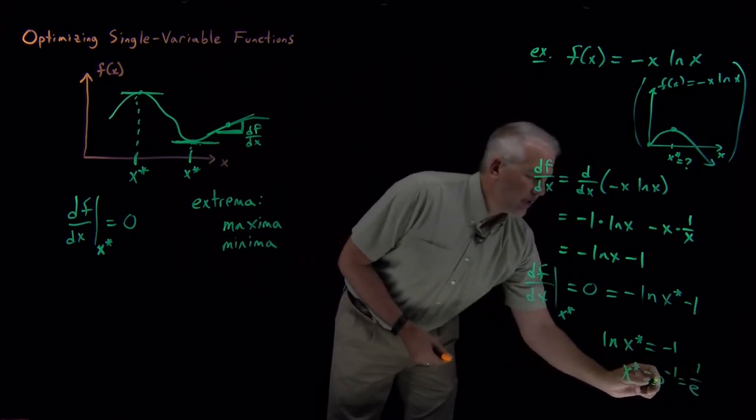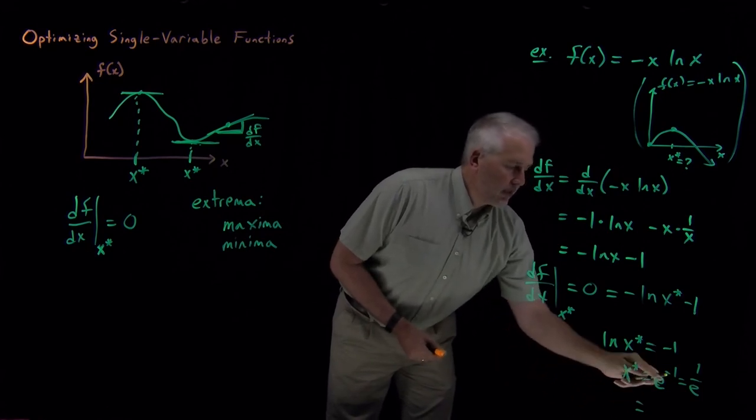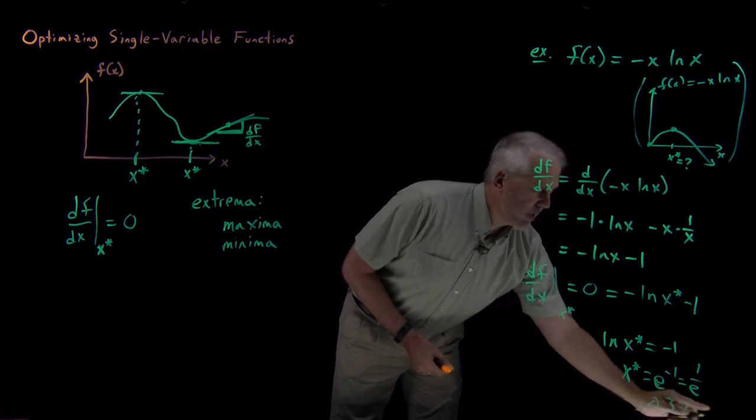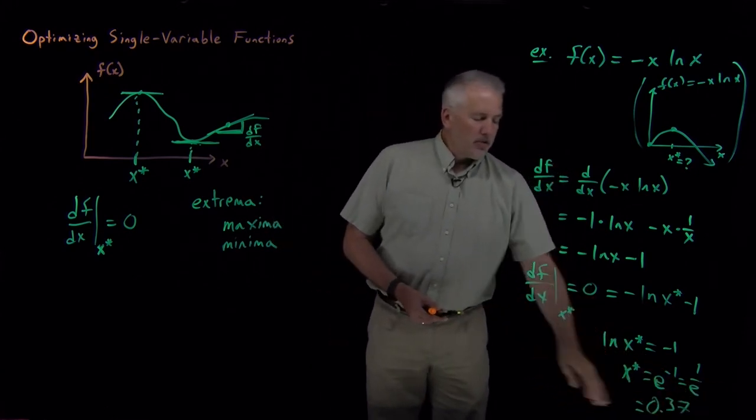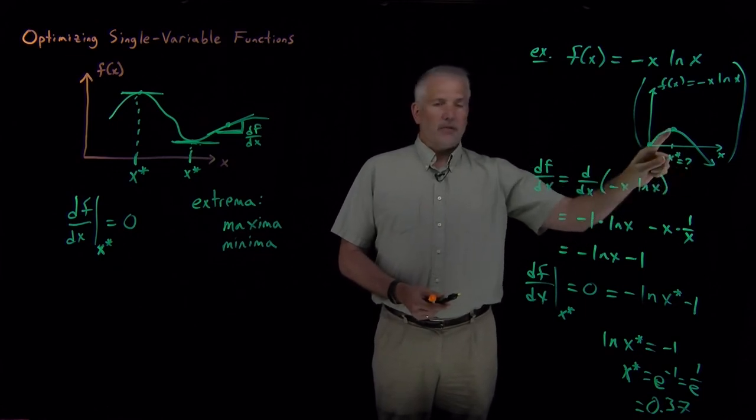And just to stick a numerical value on that, one over e, if I calculate e to the negative one, that works out to be about 0.37 with lots more significant figures. But the answer to the question that we've asked is 0.37. The value of x at which the function reaches a maximum is 0.37.